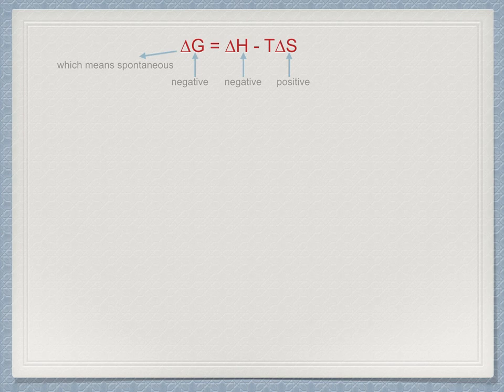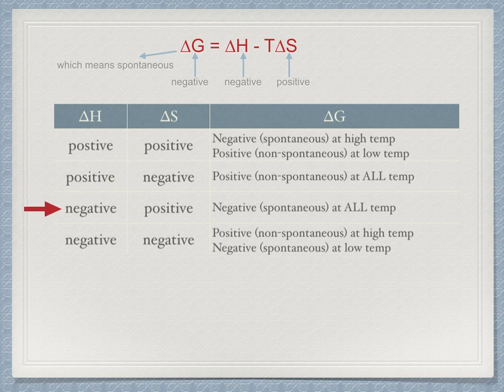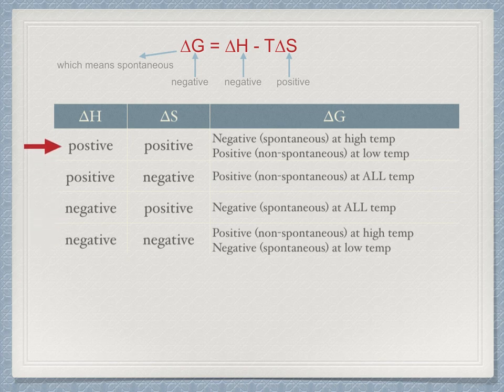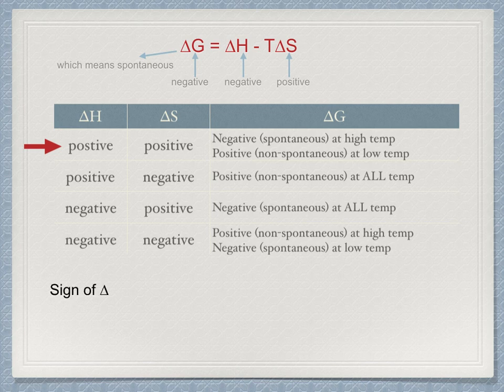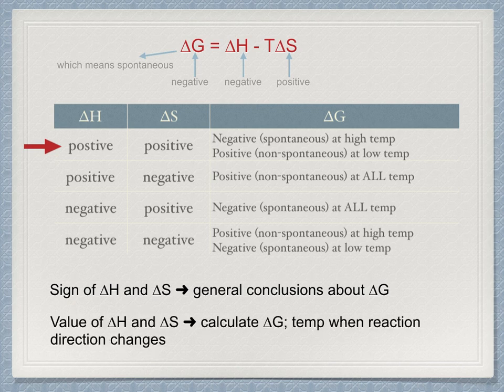This table encapsulates the four possible conditions. Note how there are two conditions where the reaction does not change with temperature. Negative, positive, and reaction always goes forward. Positive, negative, and reaction never goes forward. The reverse reaction is always spontaneous. The other two conditions have spontaneity either at low temperature or high temperature. Knowledge of the signs alone for delta H and delta S allow us to draw some general conclusions about the reaction direction. Having the values for those variables allows a calculation of the temperature when the reaction direction changes.